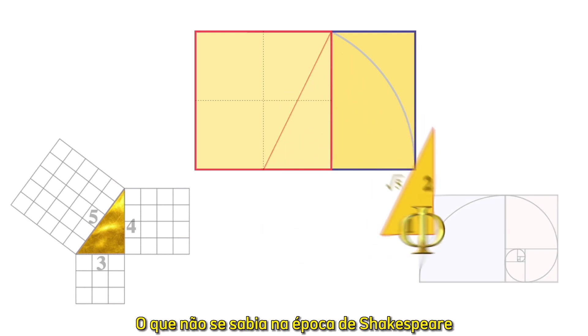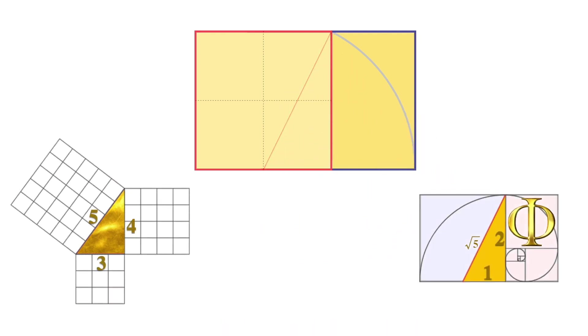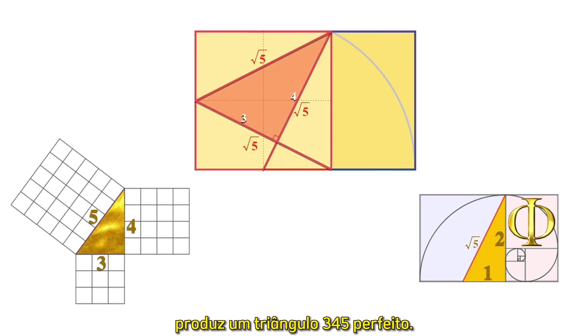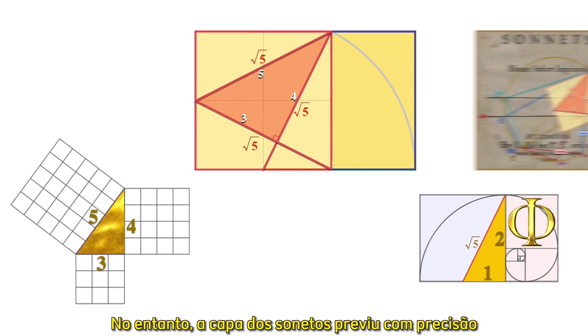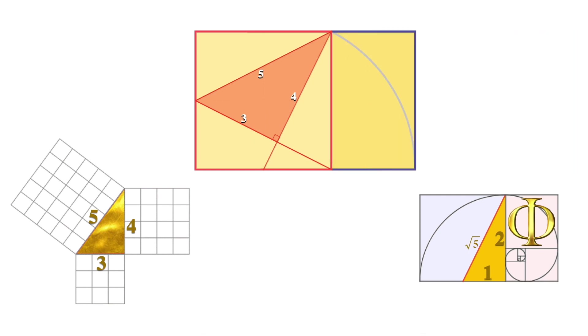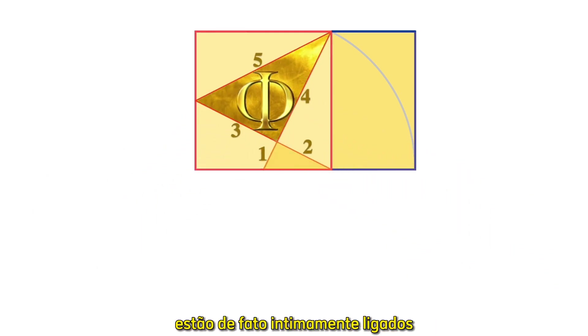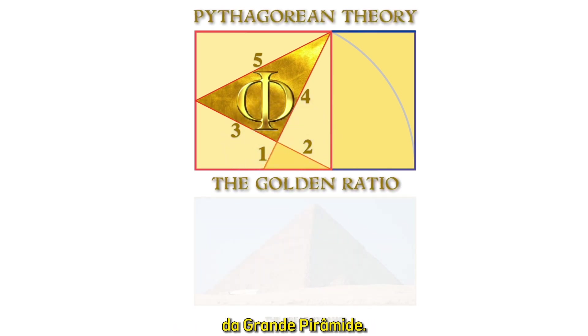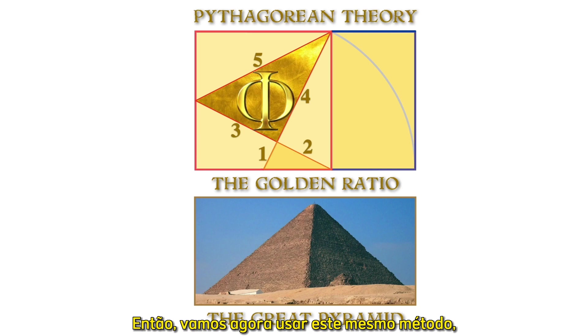What was not known during Shakespeare's time is that simply drawing three half diagonals within a square produces a perfect 3-4-5 triangle. Yet the sonnet's cover accurately predicted it and connected it to a math constant at Giza. The great Kepler never knew that geometry's two great treasures are indeed intimately linked and hidden in the perfect structure of the Great Pyramid. So let's now use this same method, linking the diagonal and the half diagonal of Metatron's rectangle.